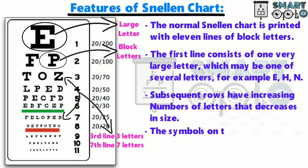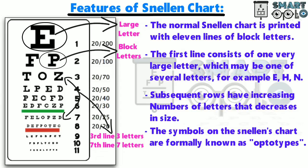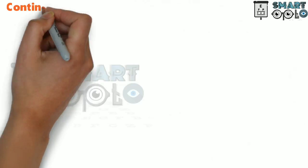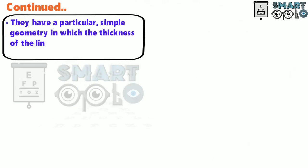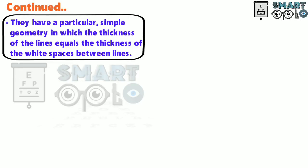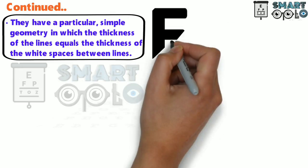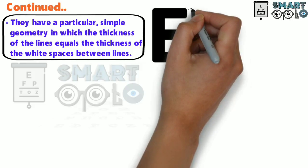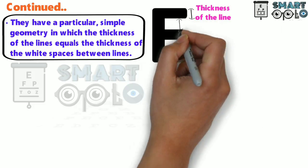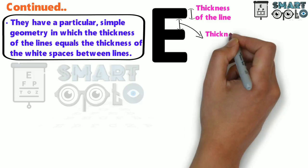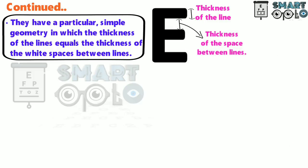The symbols on an acuity chart are formerly known as optotypes. They have a particular simple geometry in which the thickness of the line equals the thickness of white space between lines. In this figure, this is the thickness of the line of the letters, which is equal to the thickness of the space between the lines.